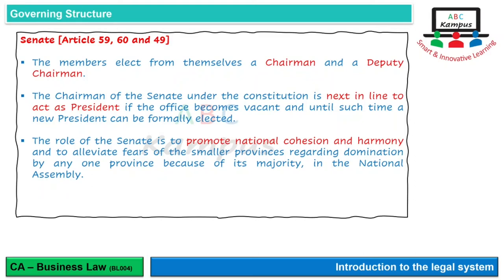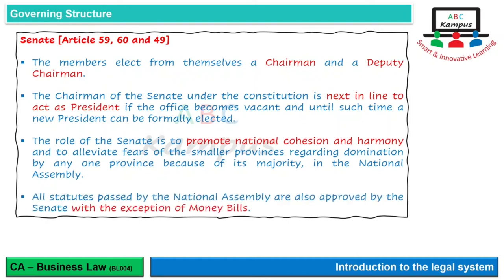جو smaller provinces ہیں ان کی concerns کو elevate کرنا، کیونکہ جو ایسے صوبے ہوتے ہیں جن کی آبادی کم ہے وہ کہتے ہیں کہ National Assembly کے اندر ہماری majority نہیں ہے اس لیے ہمارے points نہیں سنے جاتے، لیکن Senate میں سب کی equal representation ہے۔ تمام provinces مل کر کام کر رہے ہوتے ہیں - تمام جو statutes pass ہوتے ہیں، جتنے بھی law pass ہوتے ہیں National Assembly میں، وہ Senate سے بھی approve ہونے ہوتے ہیں سوائے money bills کے (جیسے budget یا Finance Act)۔ Money bills میں Senate کی صرف recommendations لی جاتی ہیں، Senate کا approval ضروری نہیں ہوتا.